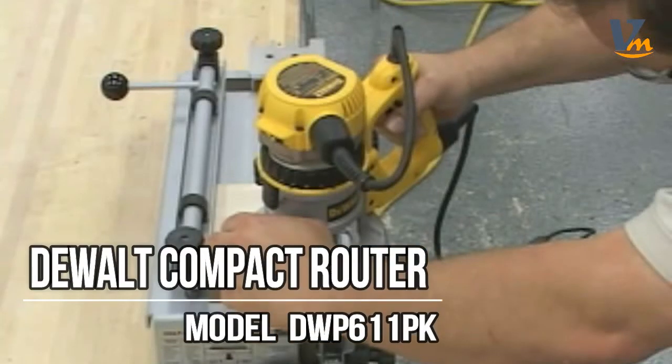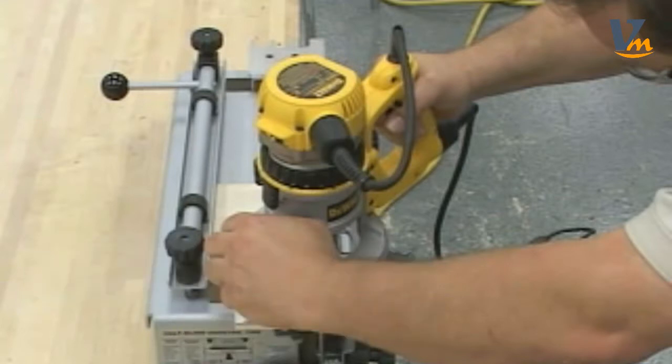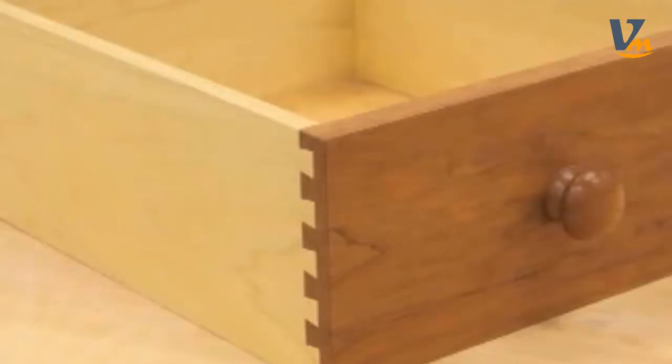Making half-blind dovetails using the DeWalt DW-618 D-Handle router and the Porter Cable 4210 dovetail jig. The half-blind dovetail is a strong mechanical joint that is also visually interesting and is the preferred joint for drawer construction.